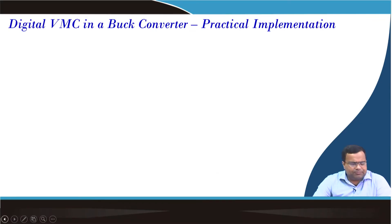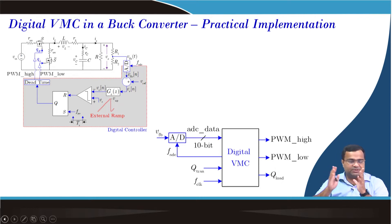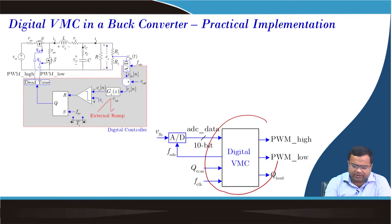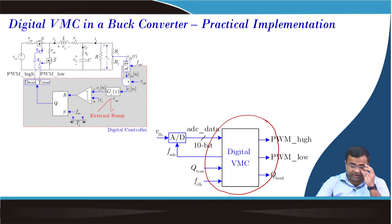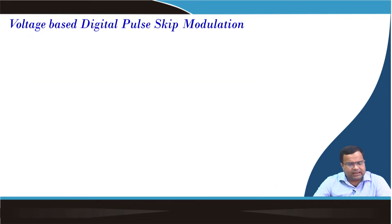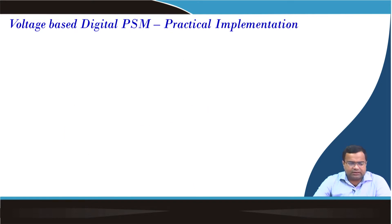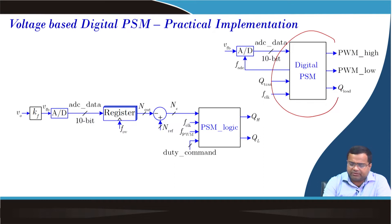If we talk about digital voltage mode control in a buck converter that we have presented multiple times — in lectures 71 to 74 we discussed in detail — this is the architecture we have already developed, implemented, and synthesized using Verilog HDL, and also implemented using FPGA. We have also discussed the digital voltage-based pulse keep modulation technique, where the practical implementation of this block was developed.